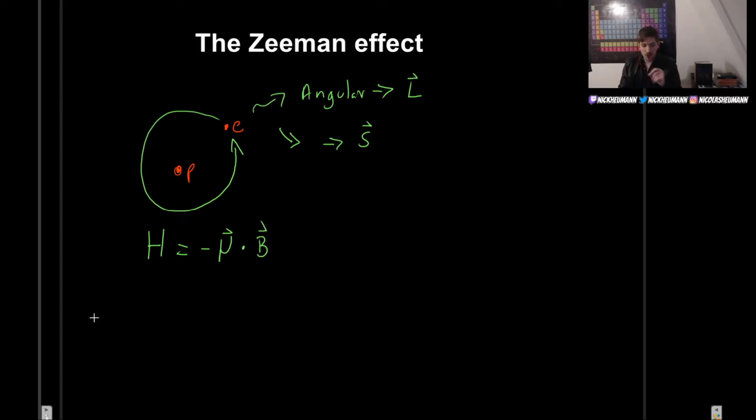And now I do want to make just a quick clarification. There are actually two sorts of Zeeman effects that you can encounter. On one side, we have the normal effect.